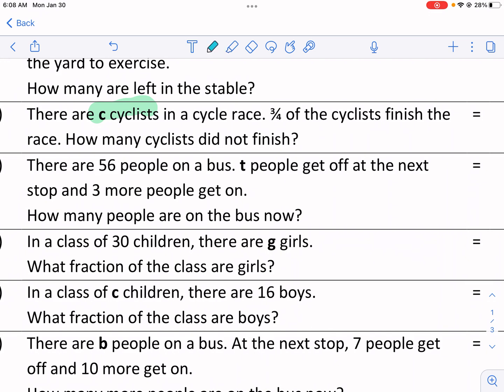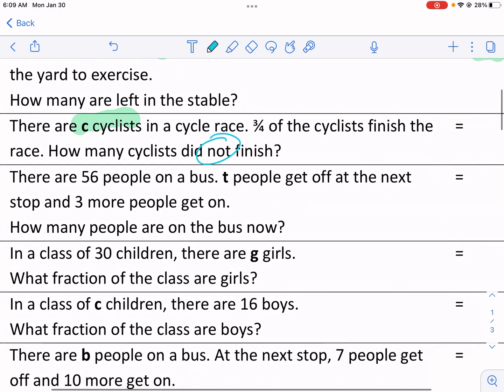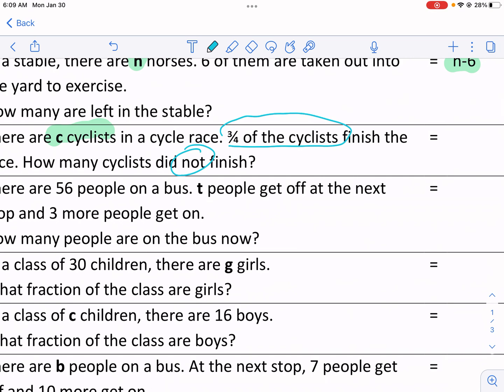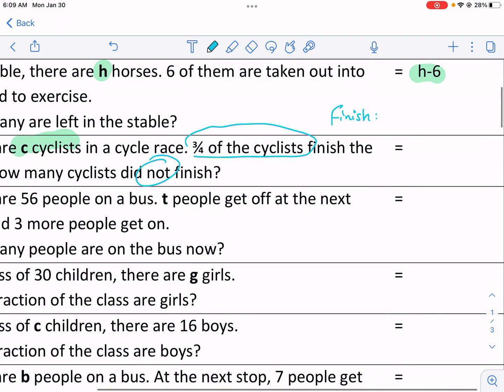Key word there, do not, meaning that we need to find the portion that did not finish the race versus the 3 fourths that did. So if there are 3 fourths that did, let's see how many finished the race first. For those that finished, it would be 3 fourths times C. That's how many finished.